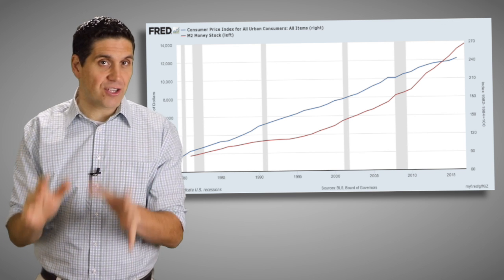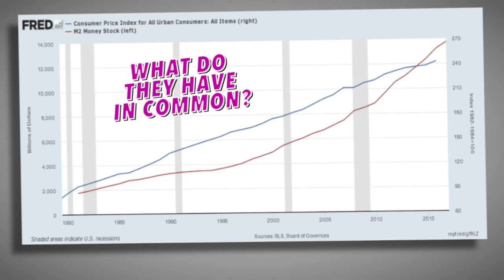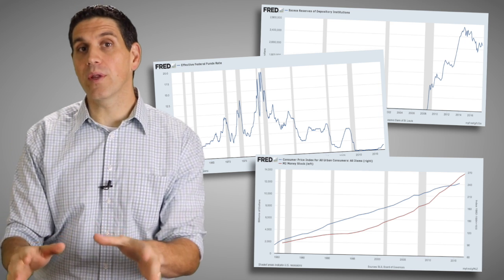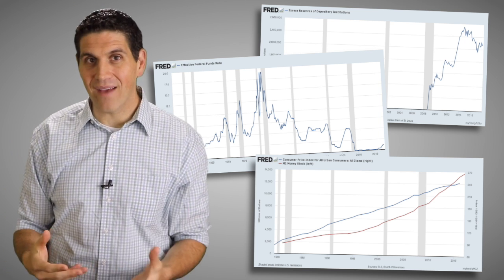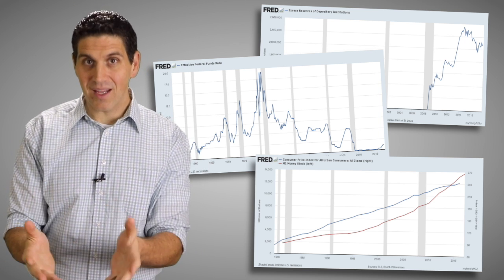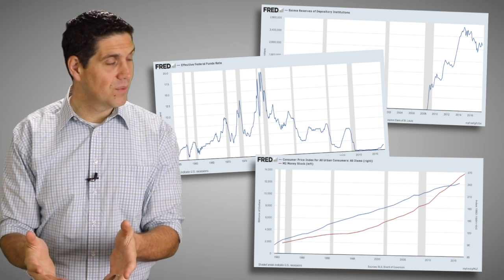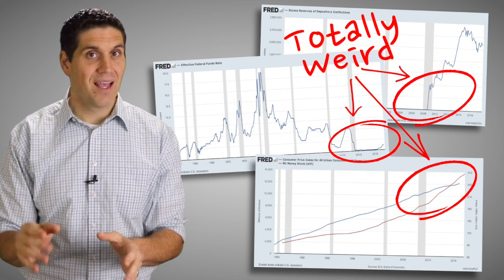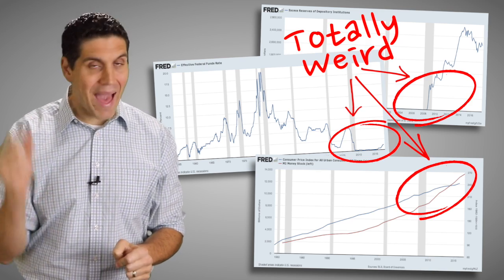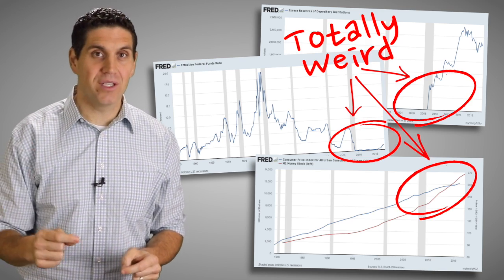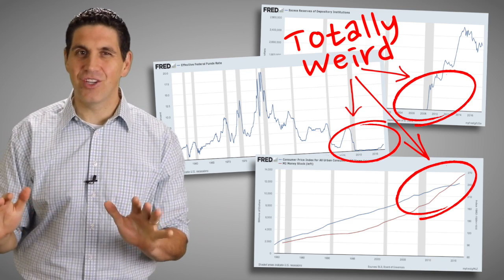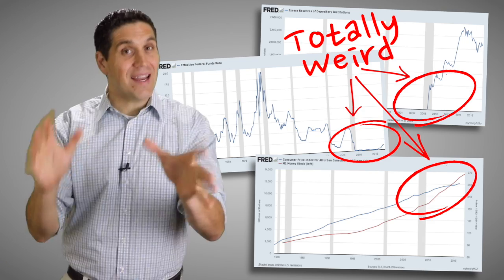The last graph actually shows two data sets. It shows the consumer price index, which shows you what's happening with inflation, and also the money supply. In general, when you look at these graphs, do you notice anything? Well, in every single case there's been dramatic changes — unprecedented changes since 2008.